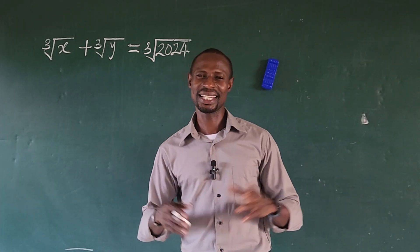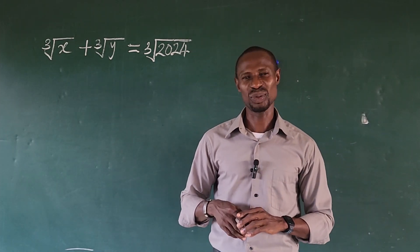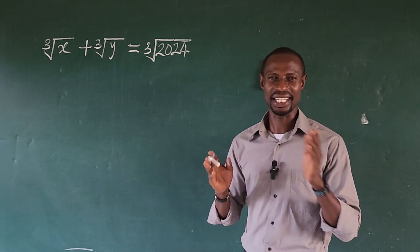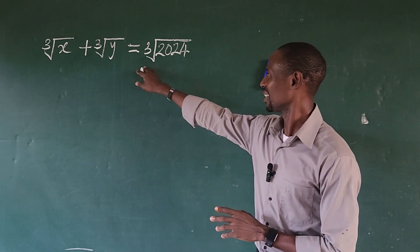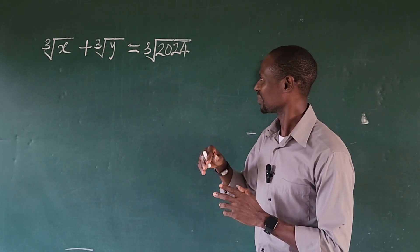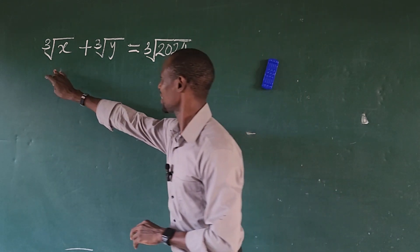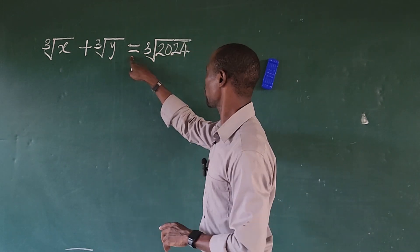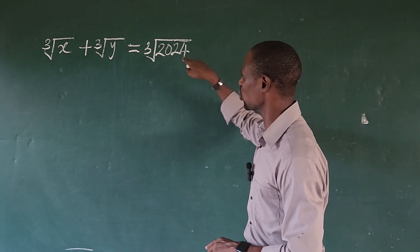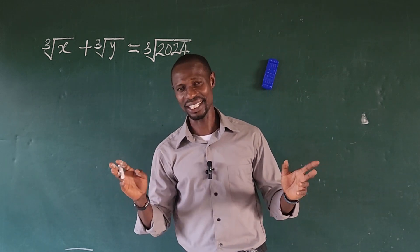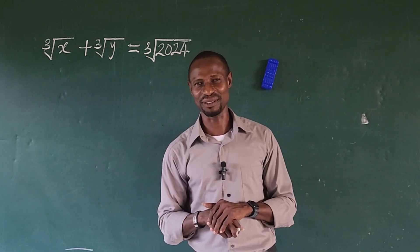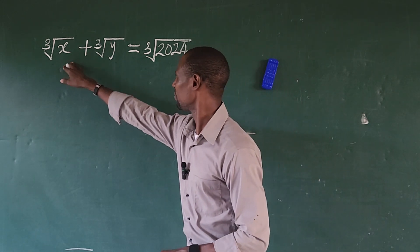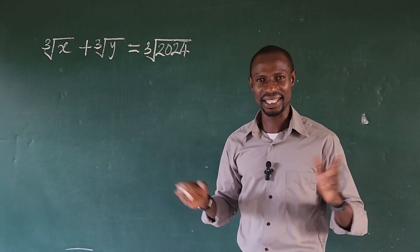Hello everyone, welcome to today's class. Here we are in the year 2024, and I decided to bring out a question that depicts the year we are in, which is 2024. Look at the question here — it's a radical equation. The question is: the cube root of x plus the cube root of y equals the cube root of 2024. This question is telling us something about the year 2024; it's a very nice question to begin the year.